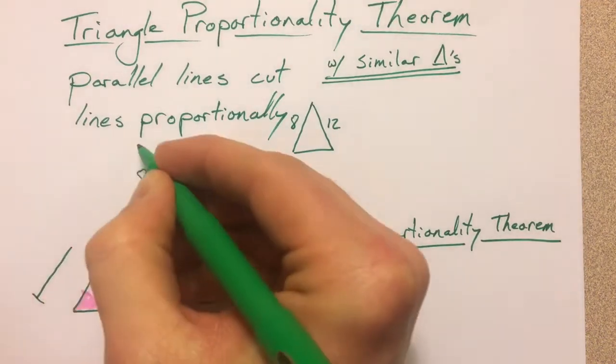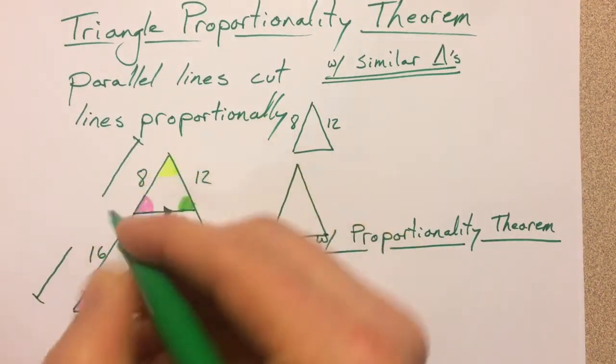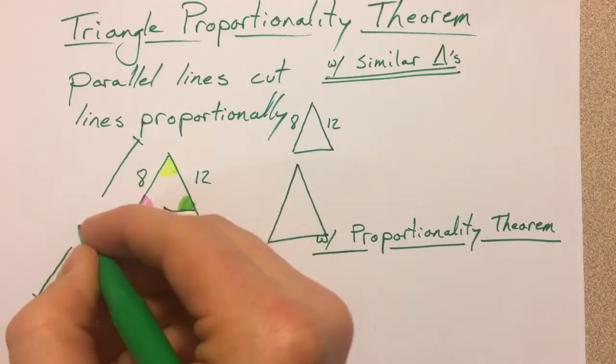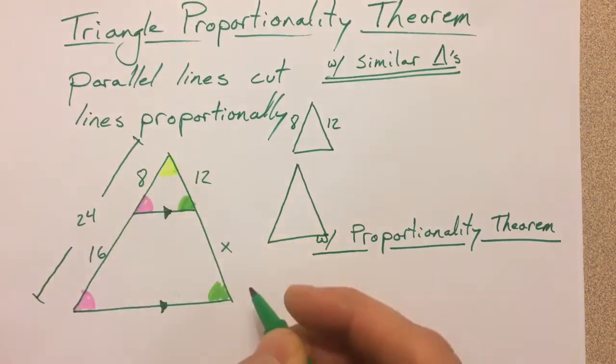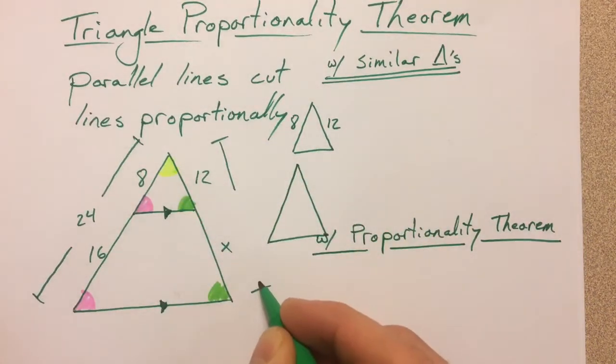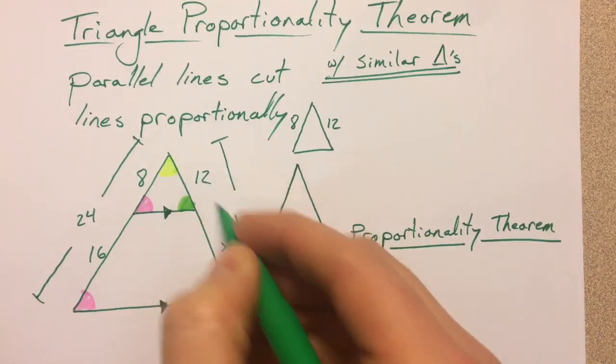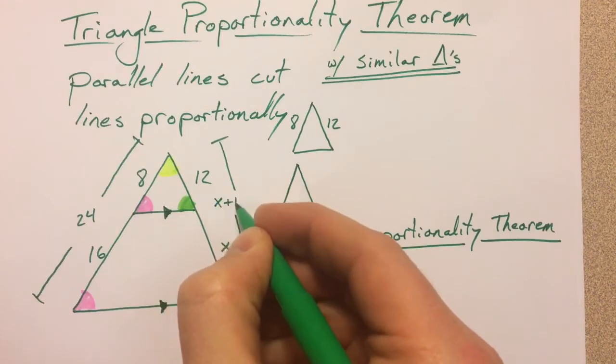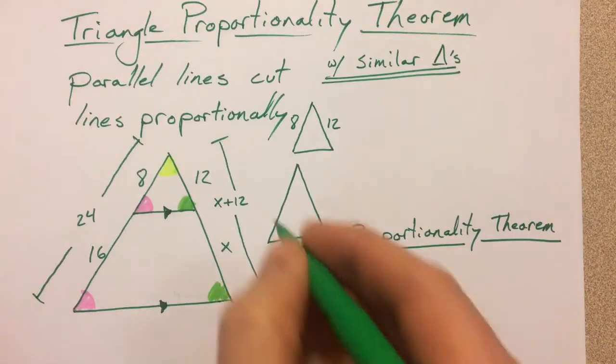This entire thing is the length of 16 and 8 together, and so that would be 24. And this entire thing is both of those together, and 12 plus x I can just write as x plus 12.